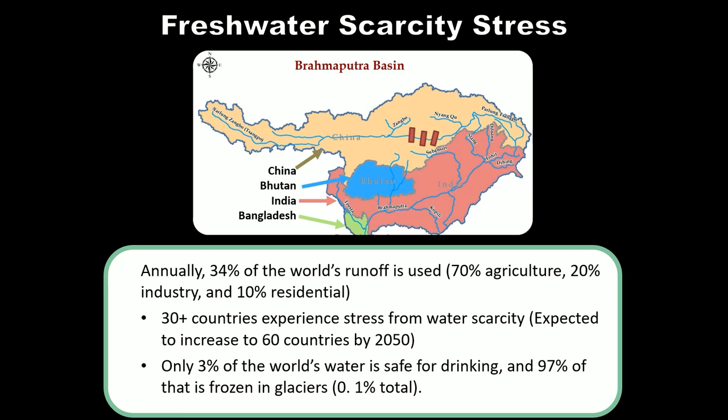In the United States, we have abundant water resources in most places, but several states are experiencing historic droughts, which causes wildfires and decreases crop production. So we create large engineering projects to try to deliver water to those states. In other countries where water conditions are even more strained, you might have something like this river shown here.